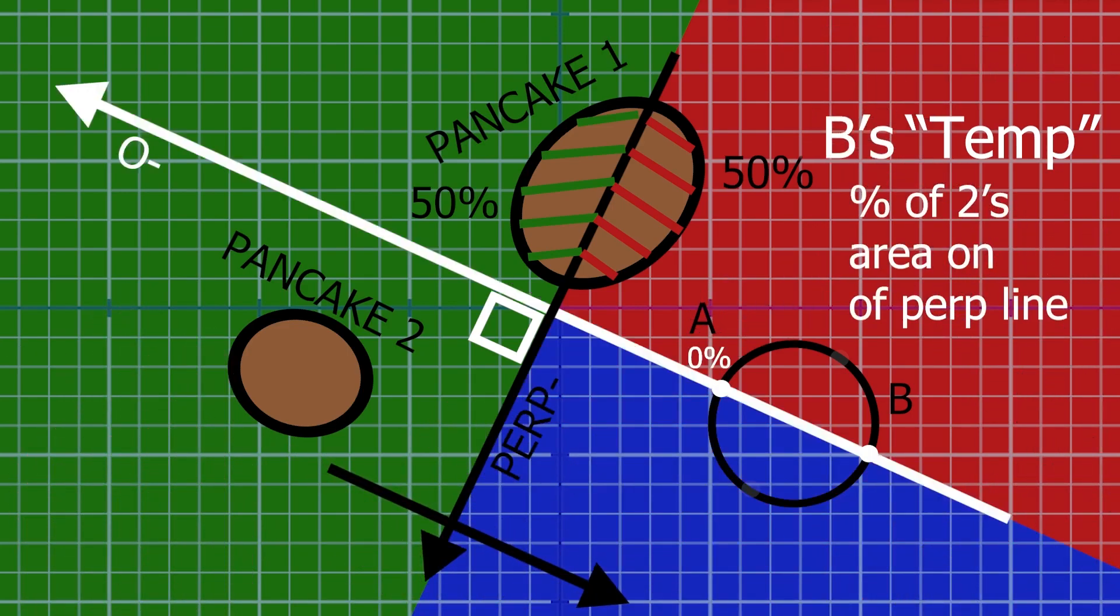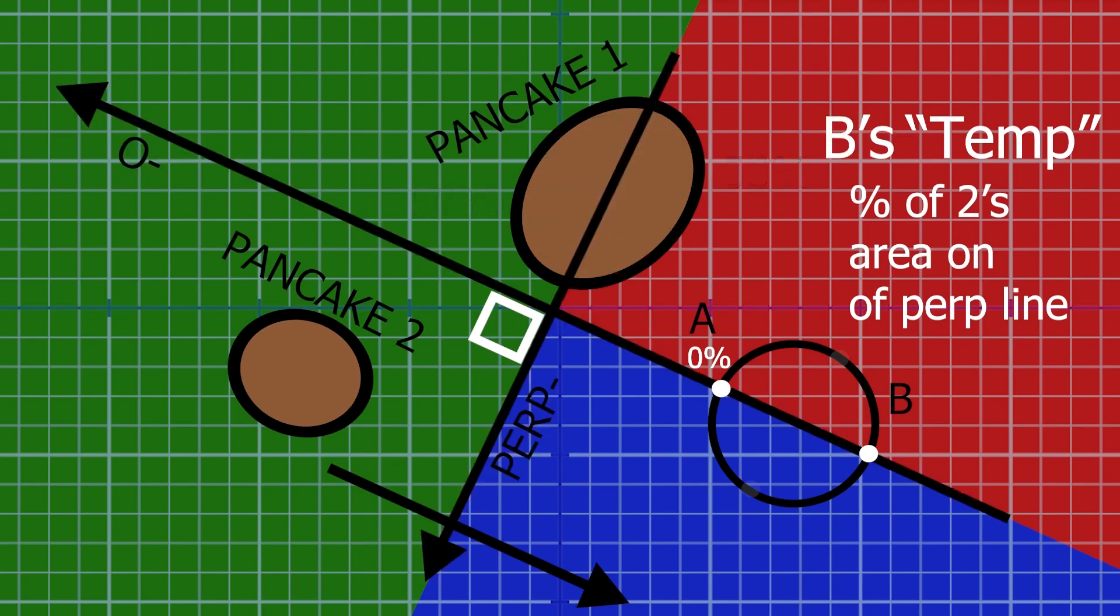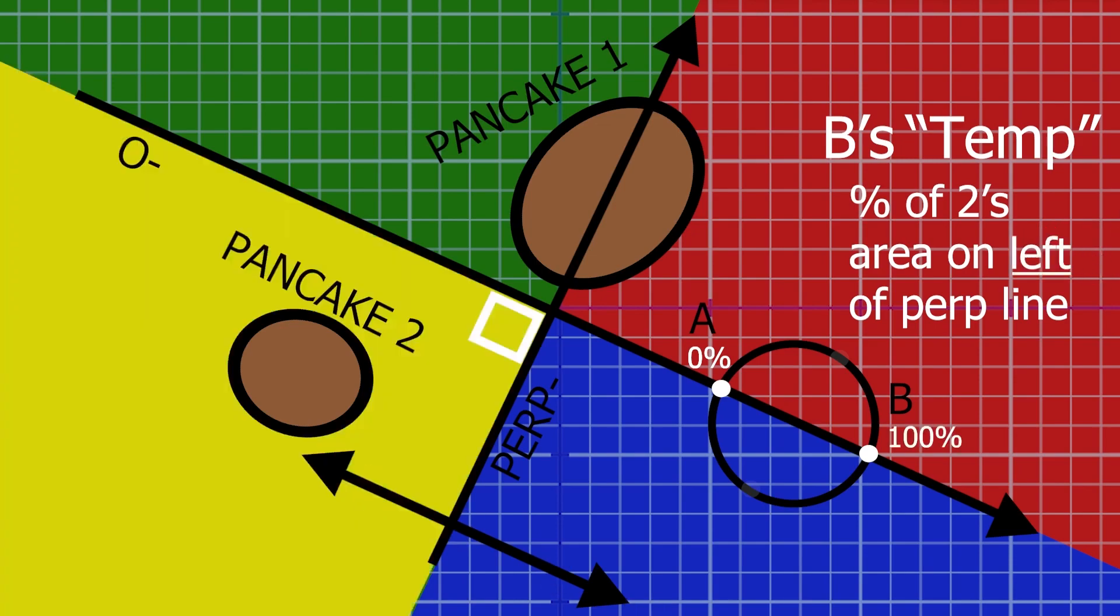Following A's process, B should have the same O and perpendicular line, but all the line's directions are reversed. This means B's value must be the exact opposite of A's. How much is on the left half?